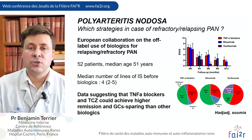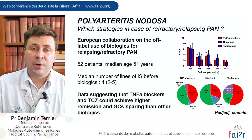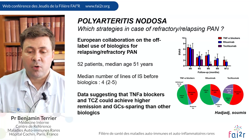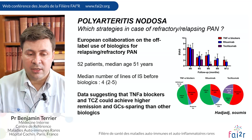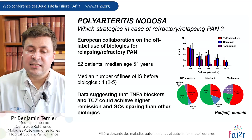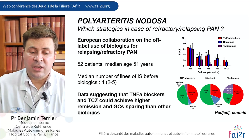The three main biologics used were TNF-alpha blockers, Rituximab, and Tocilizumab — the anti-interleukin-6 receptor antibody. The data suggested that TNF-alpha blockers and Tocilizumab could achieve higher rates of remission and better glucocorticoid-sparing.